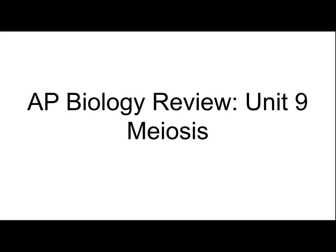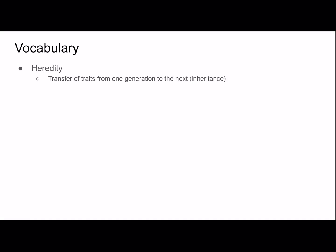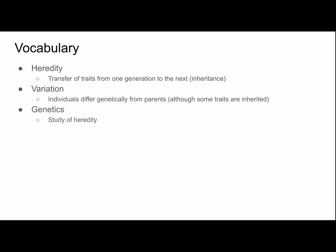This is my ninth video in my AP Biology review series, and it is about meiosis. Let's get started with some vocabulary. Heredity is the transfer of traits from one generation to the next, basically inheritance. Variation is the genetic differences between individuals — individuals differ genetically from parents, although some traits are inherited. Genetics is the study of heredity.